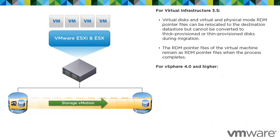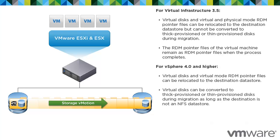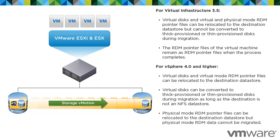For vSphere 4.0 and higher, virtual disks and virtual mode RDM pointer files can be relocated to the destination data store. Virtual disks can be converted to thick or thin provisioned disks during migration as long as the destination is not an NFS data store. Physical mode RDM pointer files can be relocated, but physical mode RDM data cannot be migrated. Virtual mode RDM data can be migrated with storage vMotion provided sufficient licensing is present.